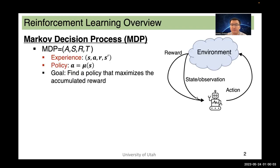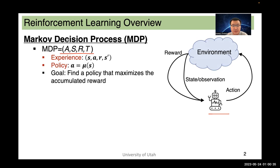In reinforcement learning, an agent interacts with the environment by making actions based on the state or observation of the environment. After it makes actions, it receives rewards, which imply how good the action is. The basic math underlying reinforcement learning is called the Markov decision process. An MDP can be represented by a quadruple (A, S, R, T), where A is the action space, S is the state space, R is the reward function, and T is the state transition probability function. An experience is just a quadruple of the current state, action, reward, and the next state.